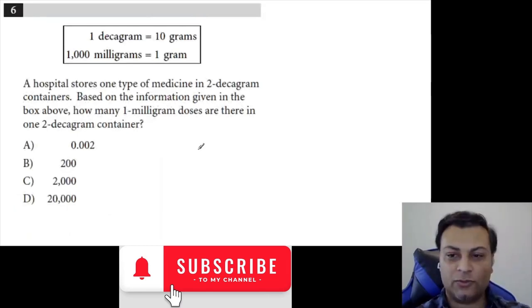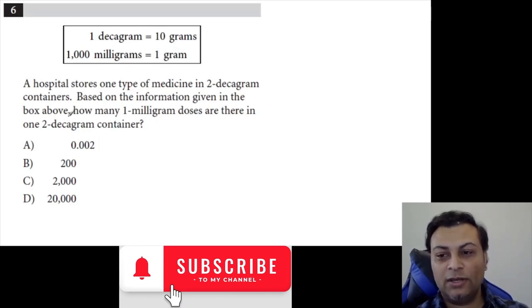Question six. A hospital stores one type of medicine in two decagram containers. Based on the information above, they tell you one decagram is 10 grams and a thousand milligrams is one gram. Based on the information given in the box above, how many one milligram doses are there in one two decagram container?